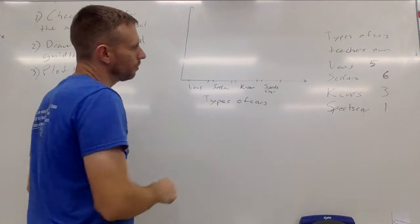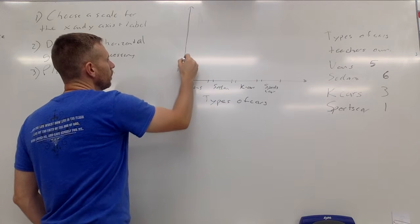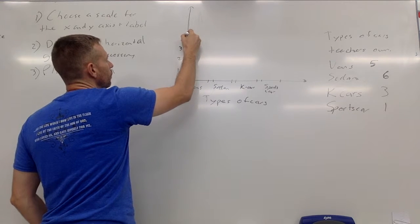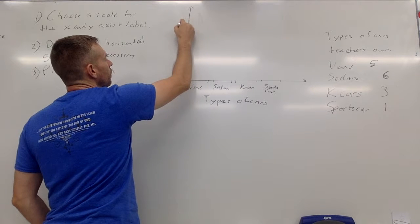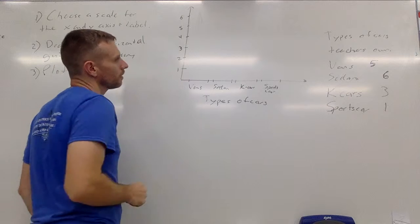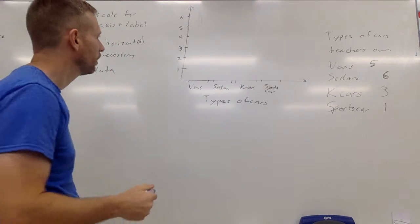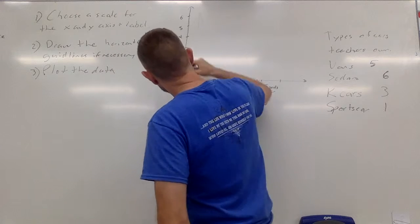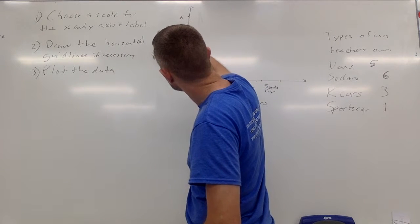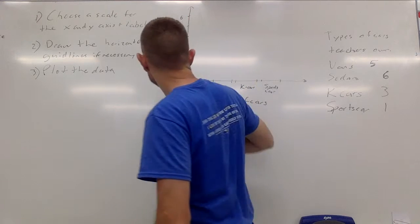Now on my y axis I have it going up to six, so I'm going to evenly space these out: one, two, three, you're going to use a ruler, four, five, six. I don't need to go to seven because there's not seven people in one particular category. I'm going to label this 'number of teachers'.